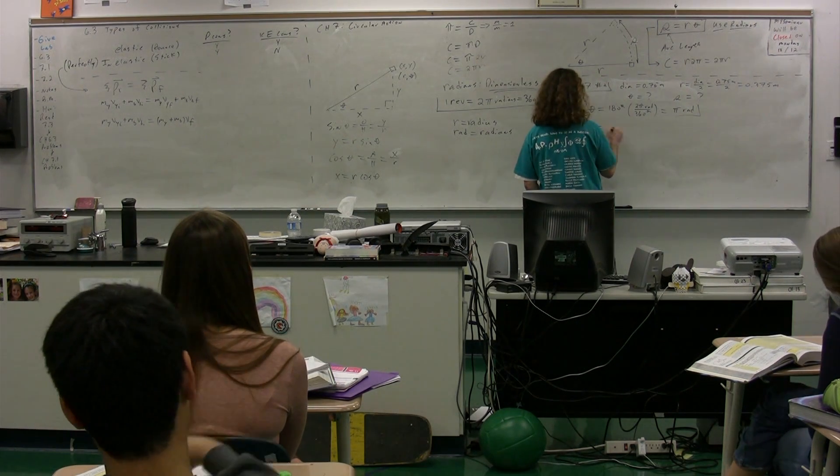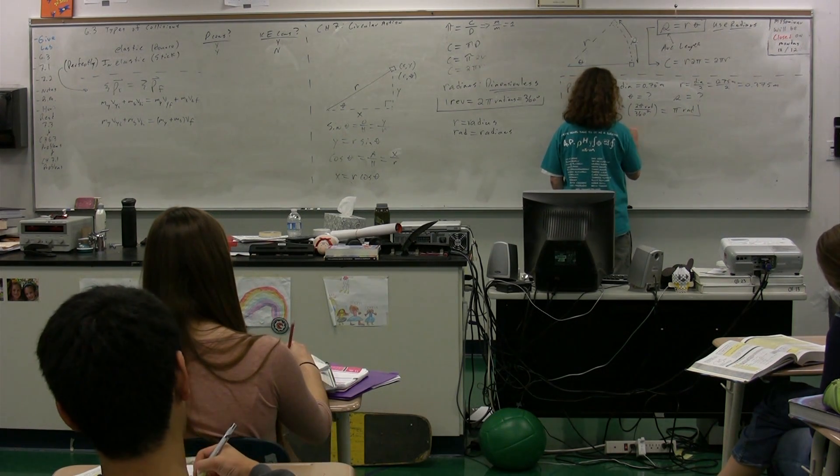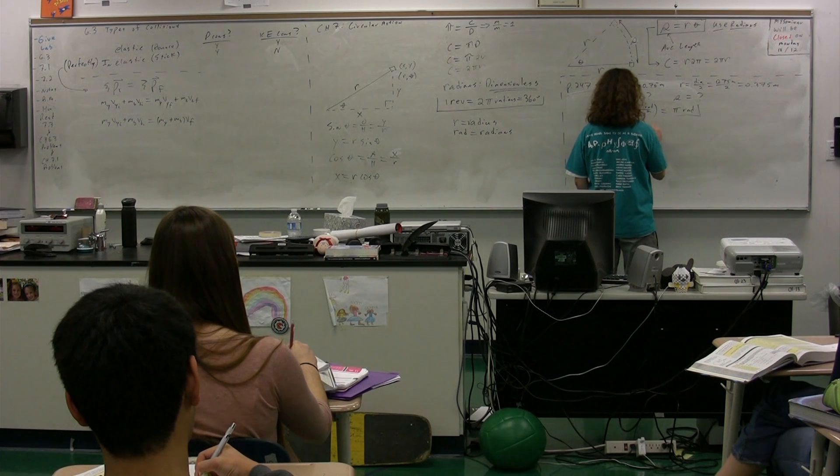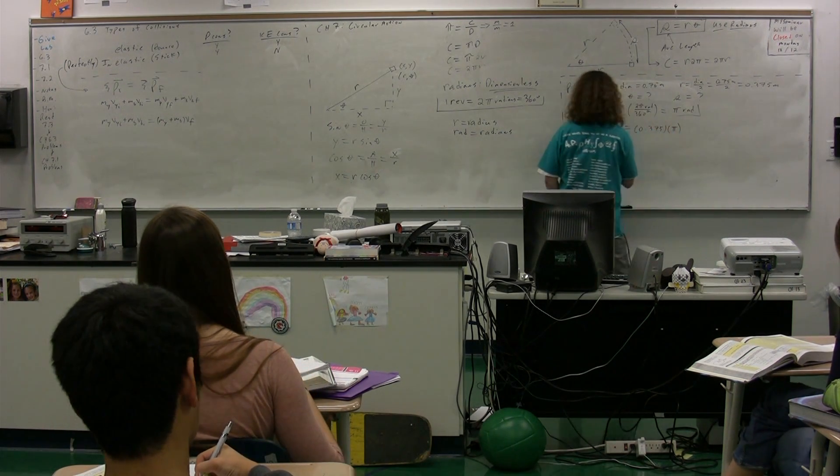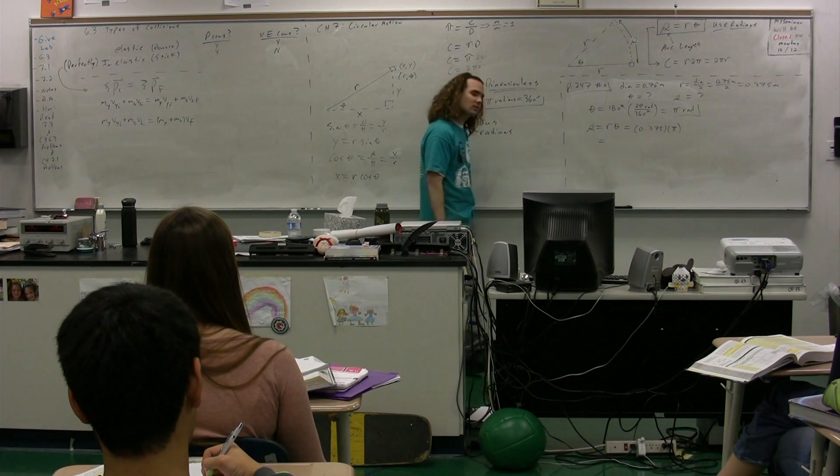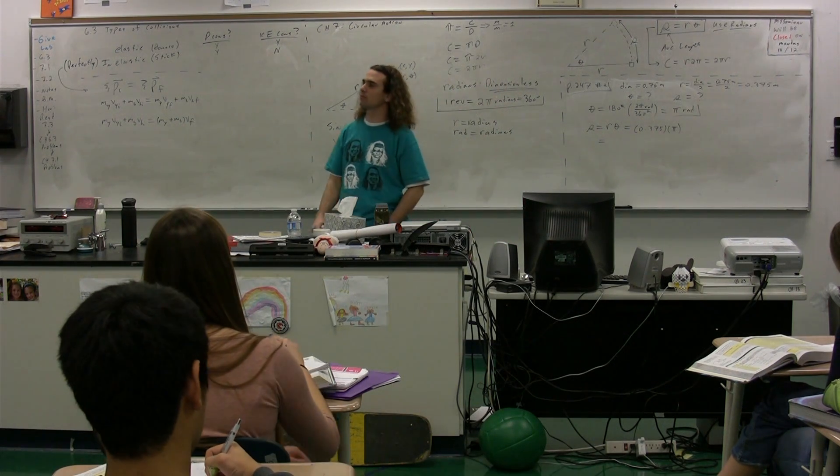We can now figure out the arc length. S equals r times theta. We have the radius 0.375 multiplied by the angle, which is pi. So, we get the arc length, the linear distance traveled by the bug before it gets squashed.